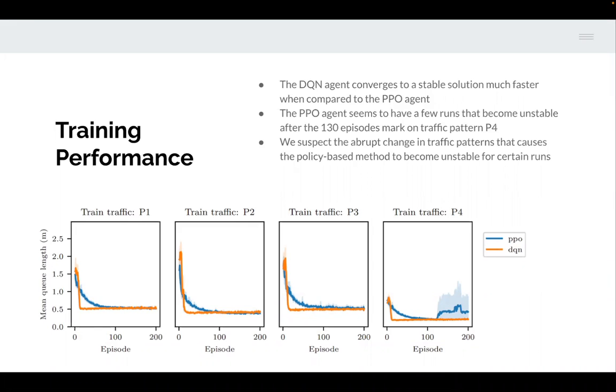Here we're showing the training performance. On the y-axis, we have the mean queue length, which is proxying for our reward. You can see the DQN versus the PPO, our two different RL agents. The DQN converges quite quickly to its optimal policy within a few episodes. We ran these agents for 200 episodes, where each episode is 1,800 seconds of traffic. We trained on all four different traffic patterns. Something to note is PPO becoming a bit unstable here in P4. As you remember, P4 was the more dynamic traffic, so we suspect that dynamicness makes PPO a bit more unstable.